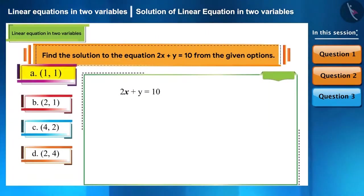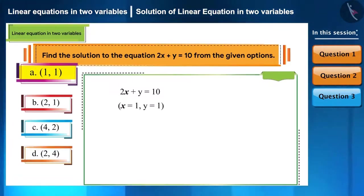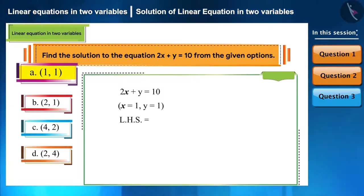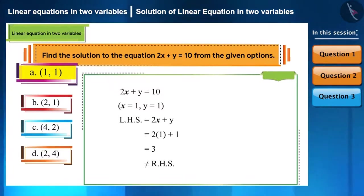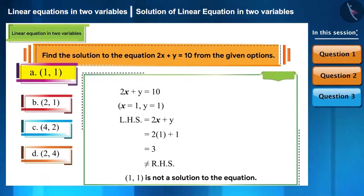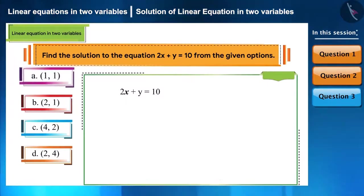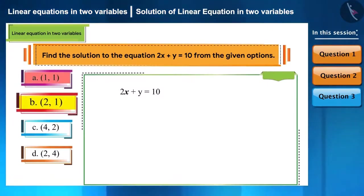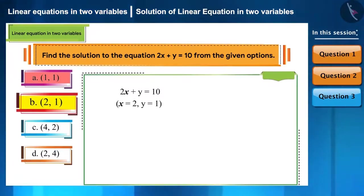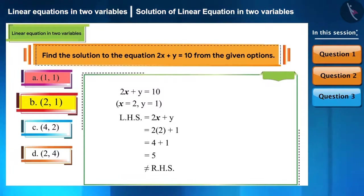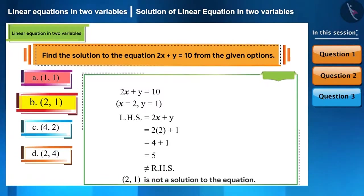For the first option, x equals 1 and y equals 1. Substituting gives a value of 3, which is not equal to 10, so (1, 1) is not a solution. For the second option, x equals 2 and y equals 1. Substituting gives 5, so this is also not a solution to the equation.